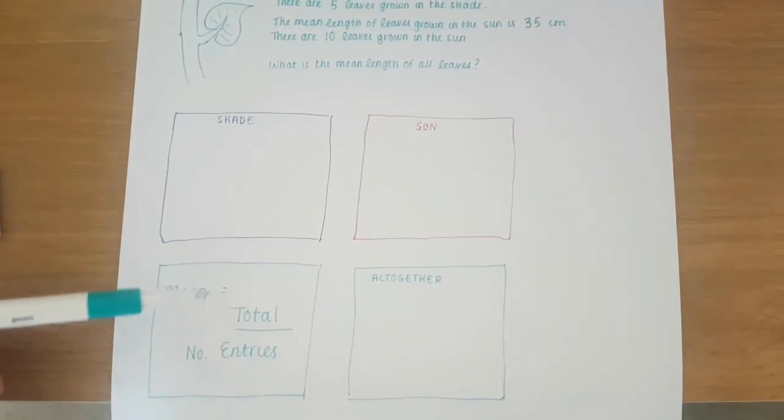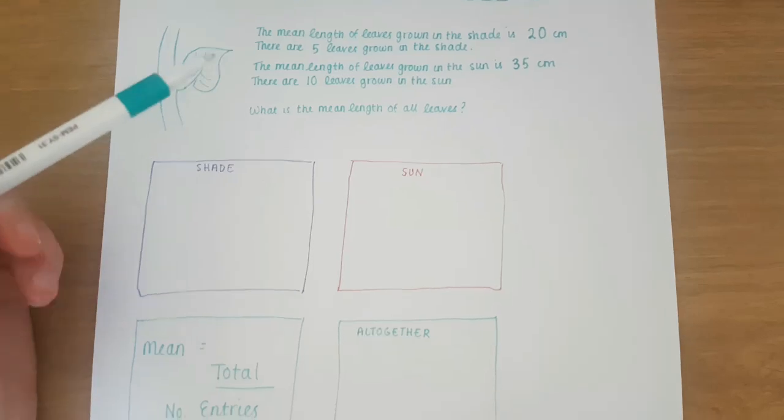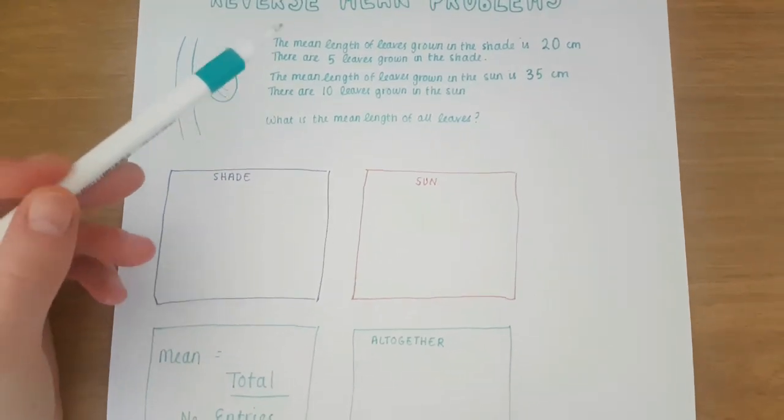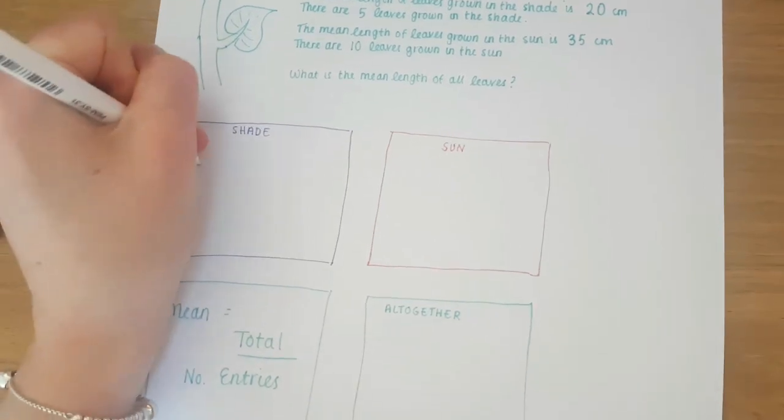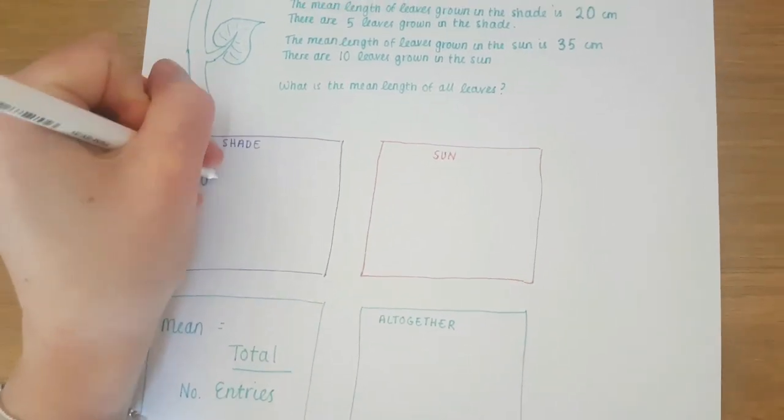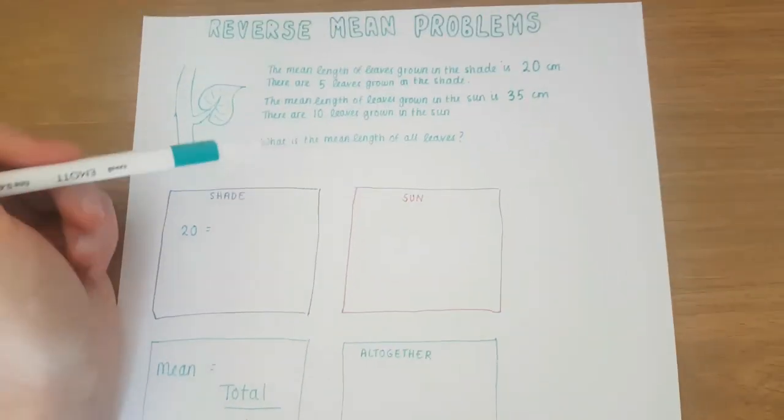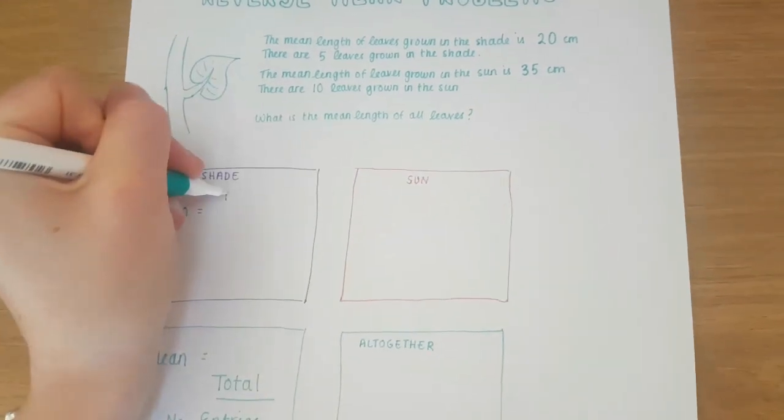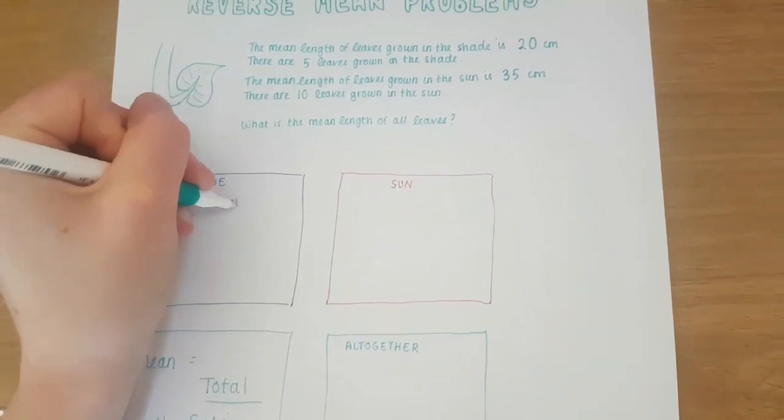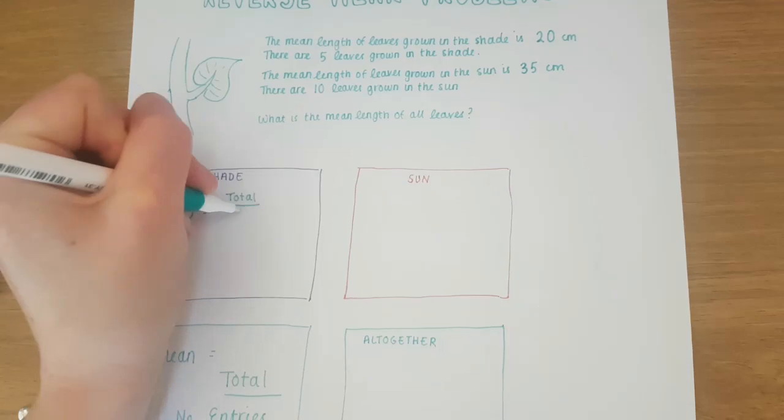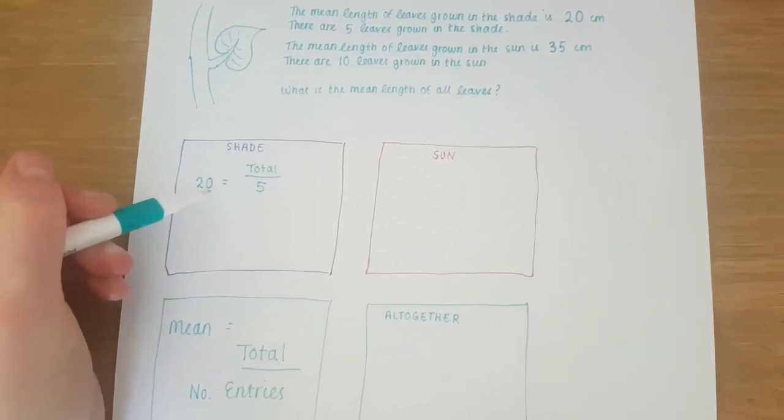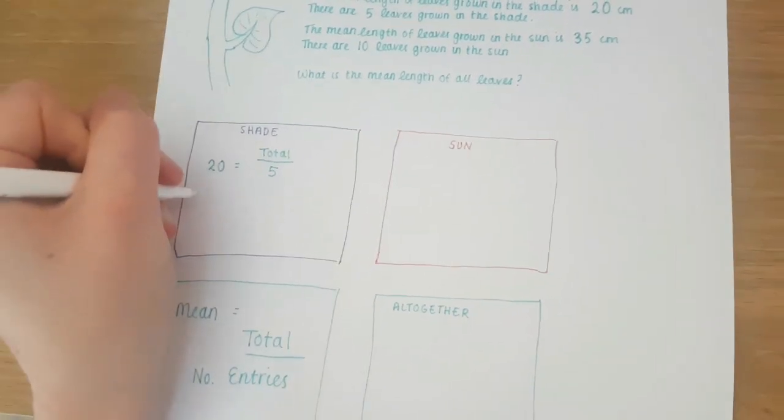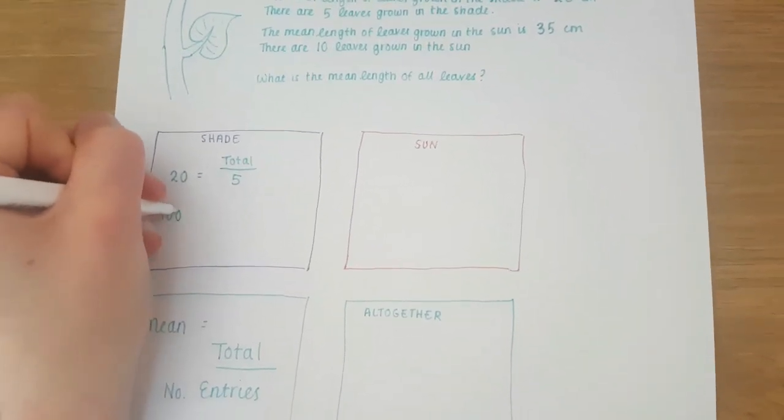If mean equals total over number of entries, we'll take information from the question. The mean length of the leaves growing in the shade is 20 centimeters so I'm just going to put 20. I don't know the total yet so I'm just going to put total, but I do know there are five leaves growing in the shade so this is over five. We can rearrange this to find the total, so if I multiply both sides by five I get 100 as my total.